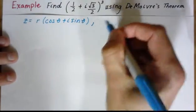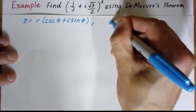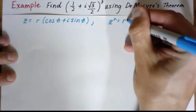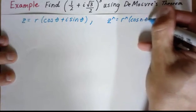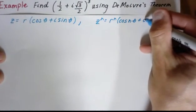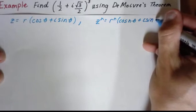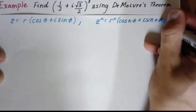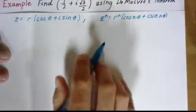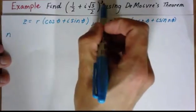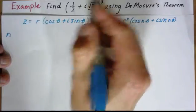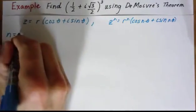De Moivre's theorem says z to the n equals r to the n times the quantity cosine n theta plus i sine n theta. So really we need n, r, and theta. Well, n is the easiest thing to do because it's what we're expanding. We're going to multiply this out three times essentially, so n is three.